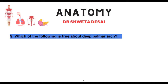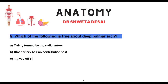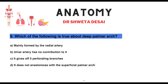Which of the following is true about the deep palmar arch: it is mainly formed by the radial artery, the ulnar artery has no contribution, it gives off five perforating branches, or it does not anastomose with the superficial palmar arch? It is mainly formed by the radial artery.